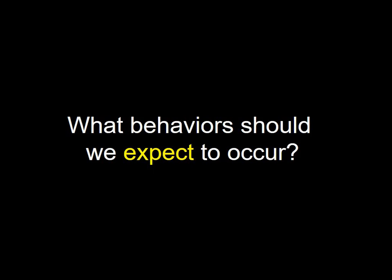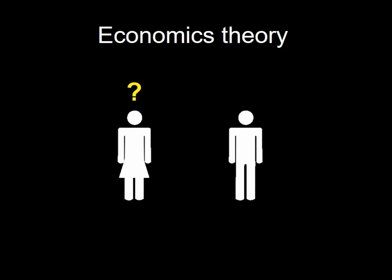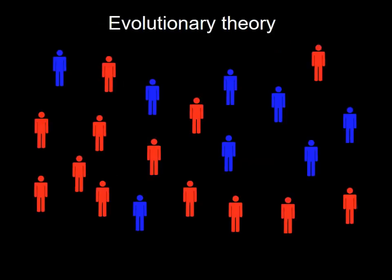Once you've defined a game, you want to know what to expect. Economists use prospective reasoning: assume rationality and self-interest are common knowledge, and figure out what makes sense for each player. Evolutionary biologists use a population approach: different strategies are represented in a population, they interact, and over time strategies doing better become more common. The question is where the population winds up.